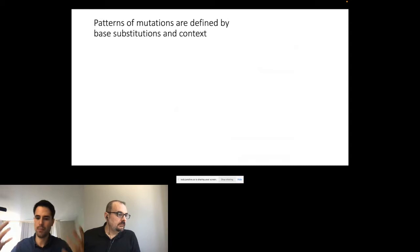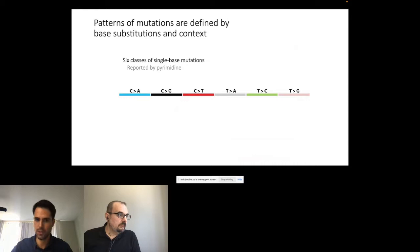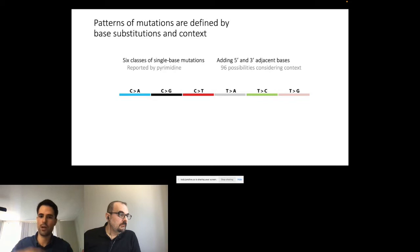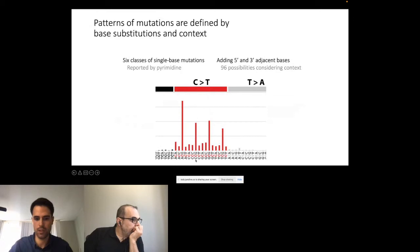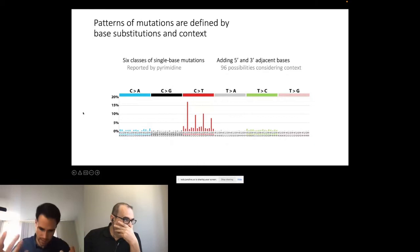We can characterize these different mutational processes by their patterns in terms of single base substitutions, reporting the specific change that happens. There are six possibilities considering the pyrimidine-based change — a C-to-A change is the same as a G-to-T, it just depends on the nucleotide you are looking at. If we consider the 5-prime and 3-prime context, we end up with 96 different possibilities, and for example for C-to-T changes there are four possibilities for the preceding nucleotide and four for the following one. This leads to the SBS-96 profile, the main well-known profile for mutational signature analysis.